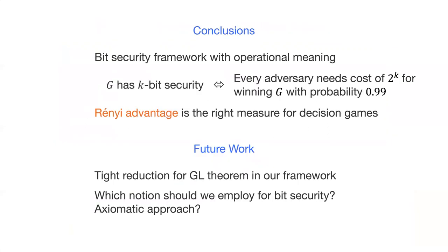We conclude our talk. We introduced a security framework with operational meaning: game G has k-bit security if every attacker needs computational cost of 2^k for winning the game with high probability. We showed that the learning advantage is the right measure for evaluating bit security of decision games. A possible future work is to give a tight reduction of the Goldreich-Levin theorem. Since we have several frameworks to evaluate bit security, it may be beneficial to discuss which notion should be employed, and building some axioms for bit security may be possible.